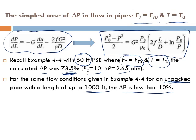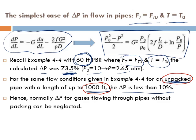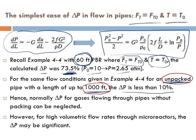Comparing these results: 1000 feet of unpacked pipe gives less than 10% pressure drop, while only 60 feet of packed pipe gave 73.5% drop. For a 60-foot unpacked pipe, it is very safe to assume negligible pressure drop. However, for high volumetric flow rates through micro-reactors where the cross-sectional area is small and velocity is large, pressure drop may be significant. This brings us to the end of today's lecture.